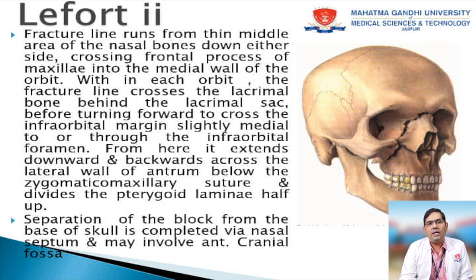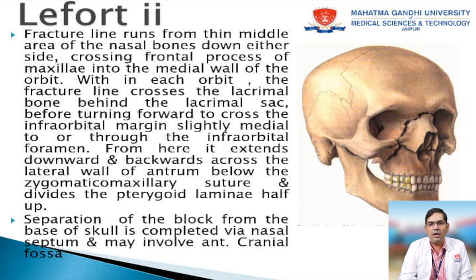The Lefort II fracture line starts from the thin middle area of the nasal bone, running down on either side into the lateral wall of the orbit, crossing the frontal process of the maxilla, the medial wall of the orbit, then the lacrimal bone behind the lacrimal sac, and then turns down anteriorly into the infraorbital rim, crossing it either medial to or through the infraorbital foramen.